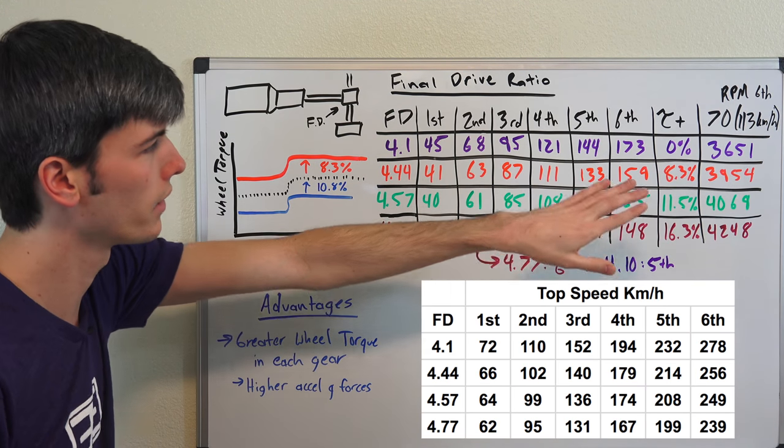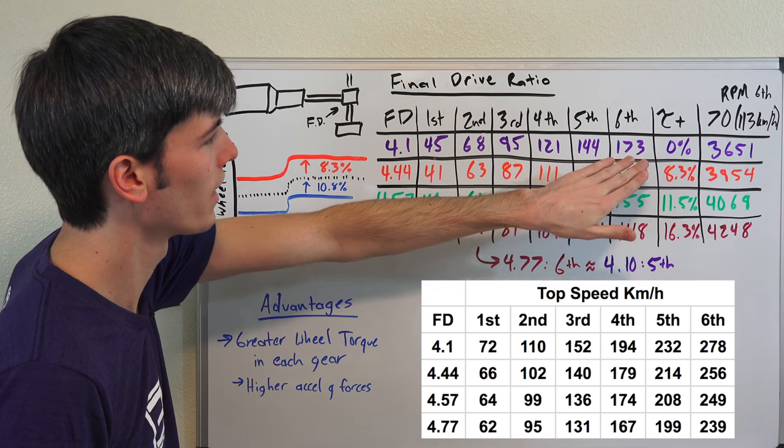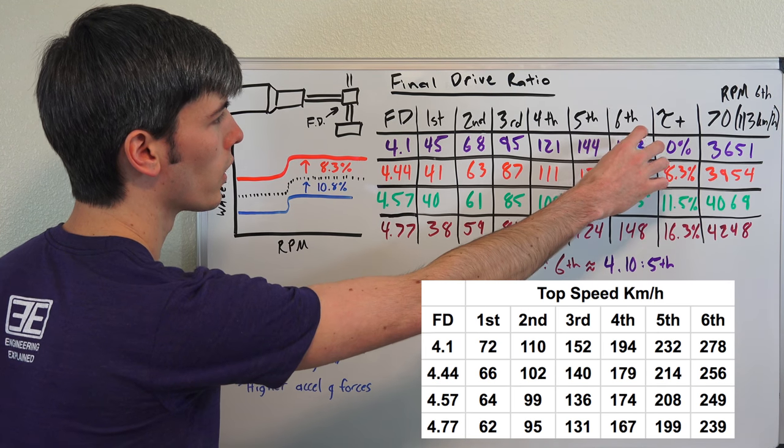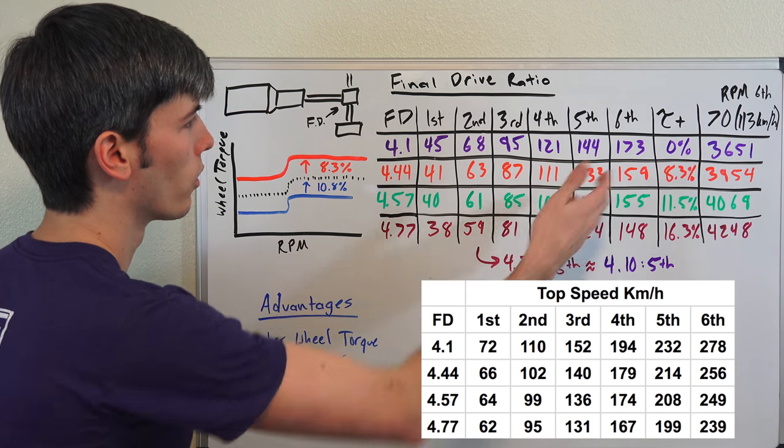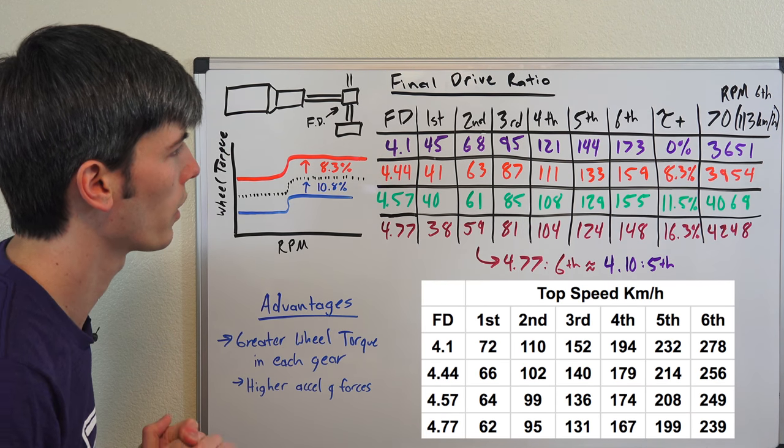Now this is just based on gearing. It doesn't matter whether you have the power or not to get there. This is just looking at the gearing what it allows you to get to. So you probably might need a little bit of a power boost in order to actually reach 173 miles per hour.